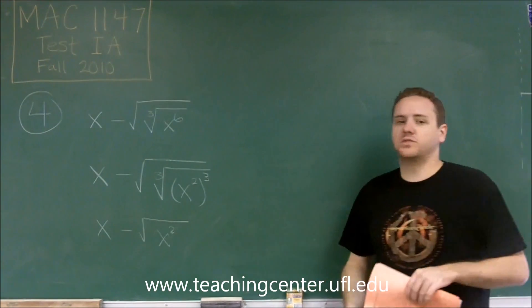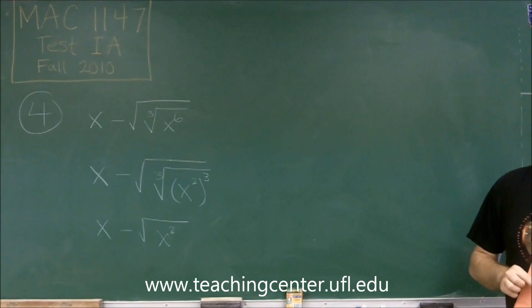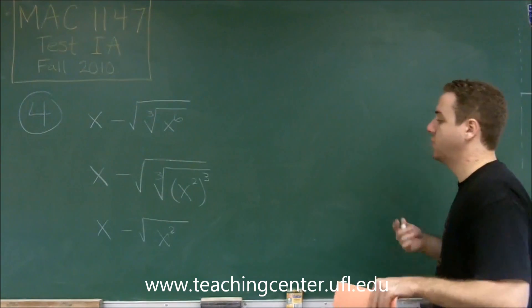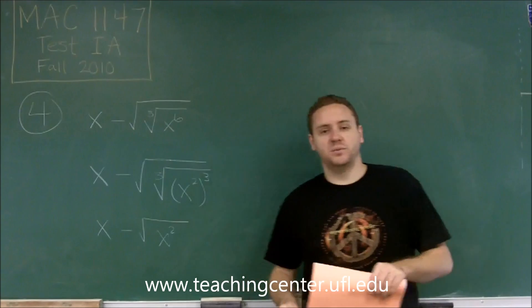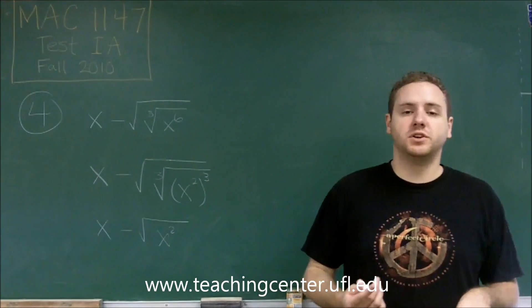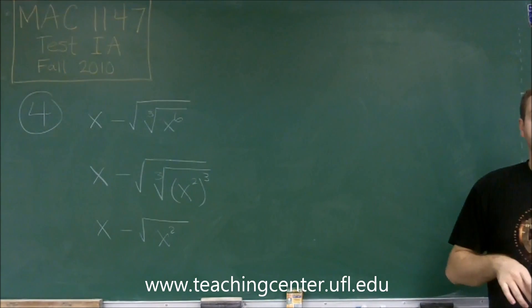So here's where the tricky part comes in. The square root of x squared is not just x because we have an even power here. So for example, let's say x was negative 2. Negative 2 squared is 4 and the square root of 4 is 2.